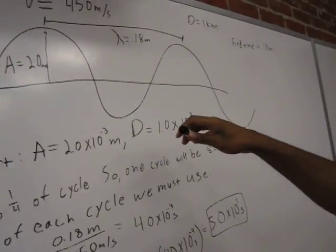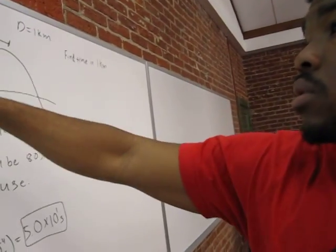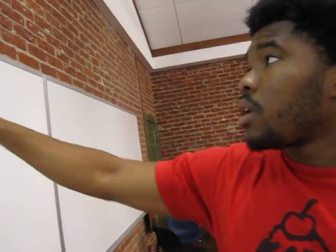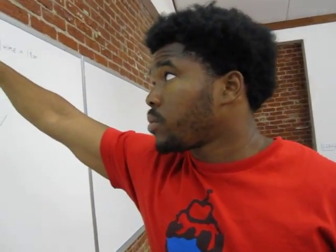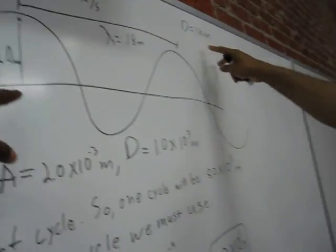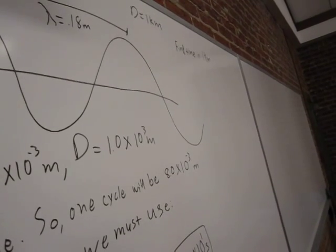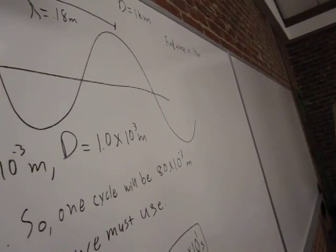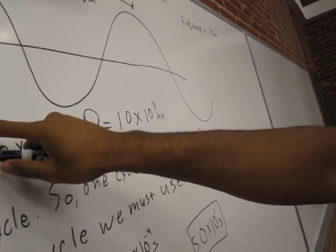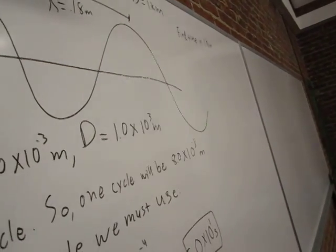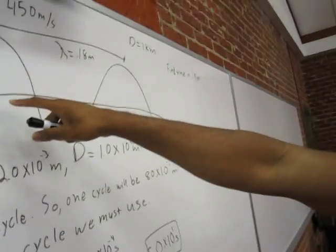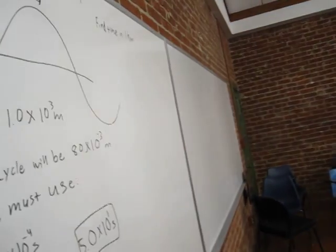So what do we want to find in this problem? We want to find how much time would it take for it to cross one kilometer. This is a particle in the wave, and it's just going up and down. So we begin by converting some of these measurements so that we would all be on meters, for the amplitude and the distance of the one kilometer.